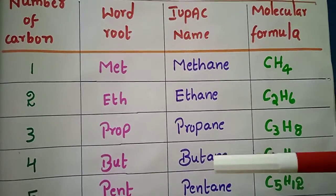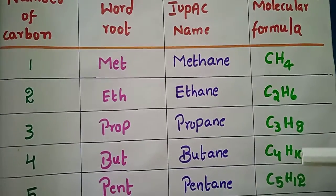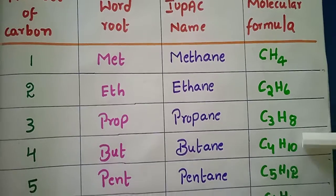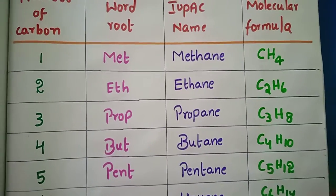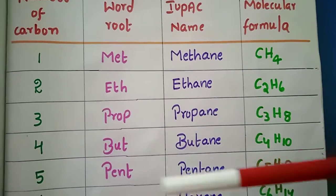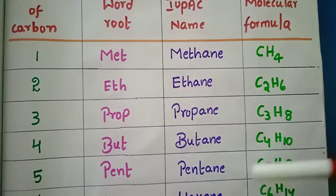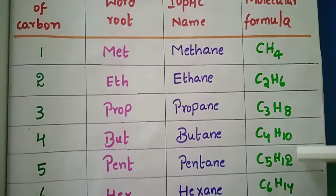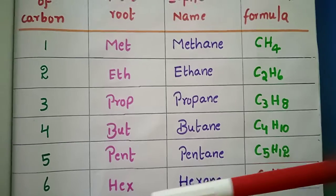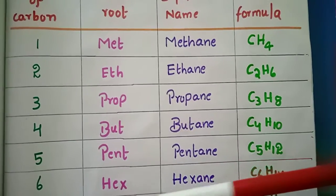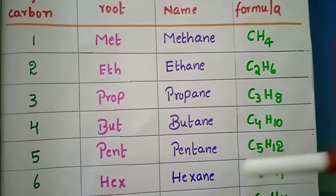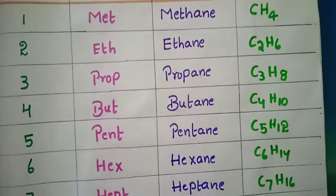For 4 carbons, the word root is 'but' — butane, formula C4H10. For 5 carbons, the word root is 'pent' — pentane, formula C5H12. For 6 carbons, the word root is 'hex' — hexane, formula C6H14.